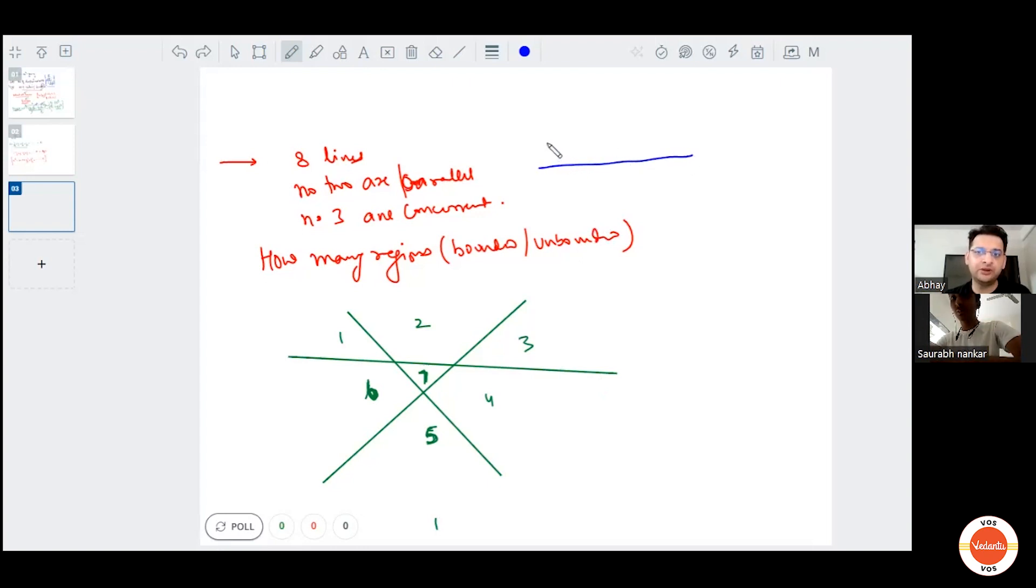Once you have a line, you have two regions, both unbounded. When you draw the next line, there are four regions, all unbounded. You have to tell me total number of regions. You don't have to tell me how many bounded, how many unbounded. Total number of regions is the question. So after each line, the regions are increasing. For the second line we get four regions. If we draw the third line, we will get seven regions. What happens if you draw the fourth line?